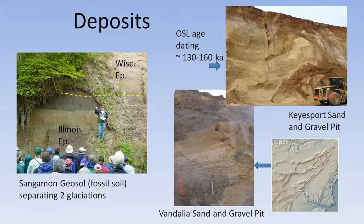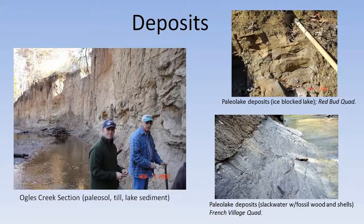Another type of deposit is sand, locally found in the Kaskaskia Valley. On the left is a paleosol that helps us separate Wisconsin deposits from Illinois episode deposits. That red band on the left is that paleosol as well, and on the right are lake sediments which we find periodically, and they occasionally have fossil wood and shell material.